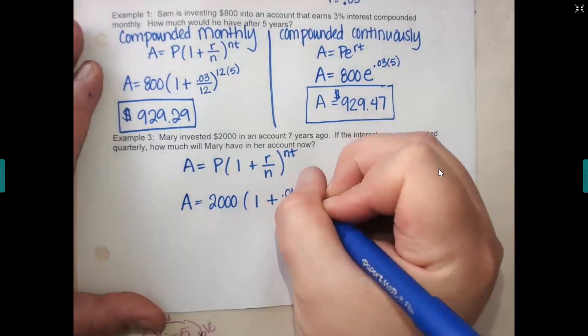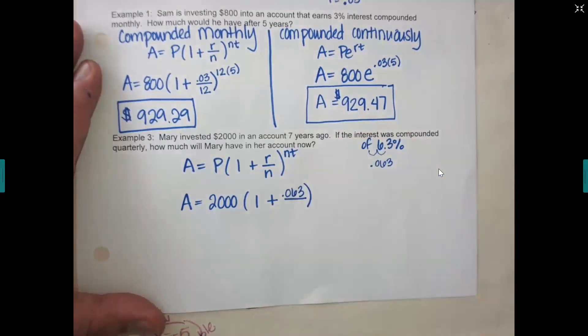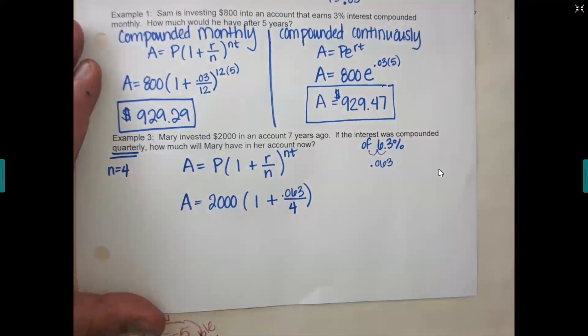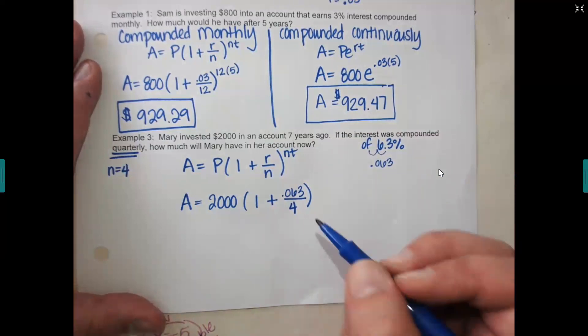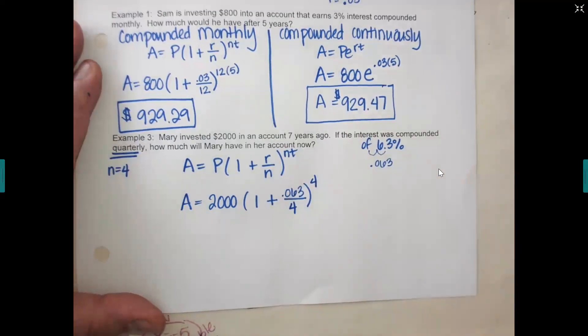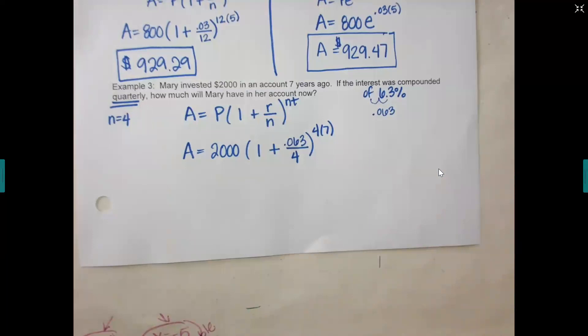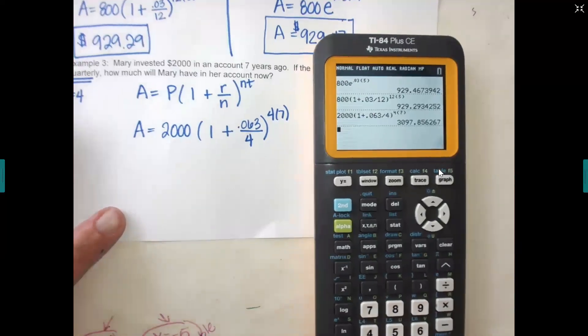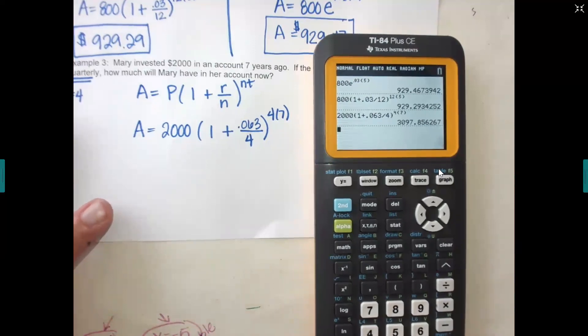So it'll be A equals 2,000 times 1 plus. Now for my interest rate, it's 6.3%. I need to move the decimal two places to the left. So if I move it over, it's going to go in front of the 6 and then give me one more for 0.063. Are we good with that? So it'll be 0.063 divide by how many times per year if it's quarterly? Four. So quarterly here means your N is a 4 if you want to write that time. And then remember, the 4 goes in two spots. It goes for the bottom N and the top N times how many years is Mary going to wait? 7. And you can just put that into your calculator.